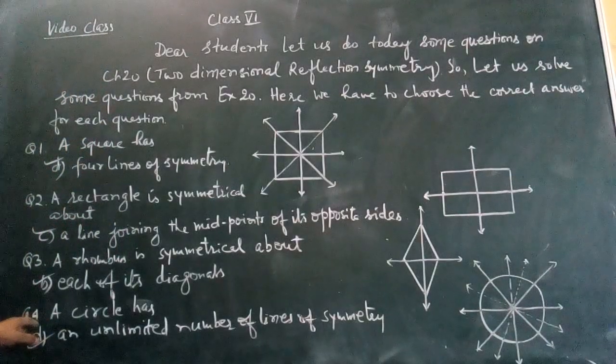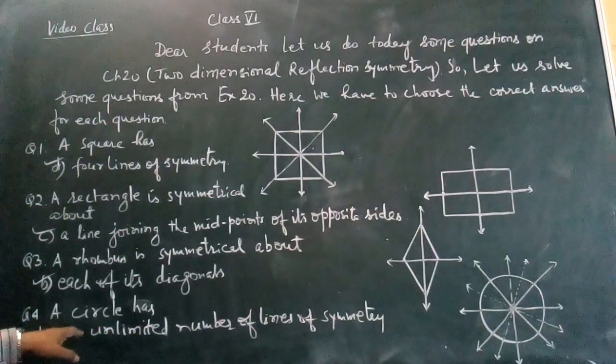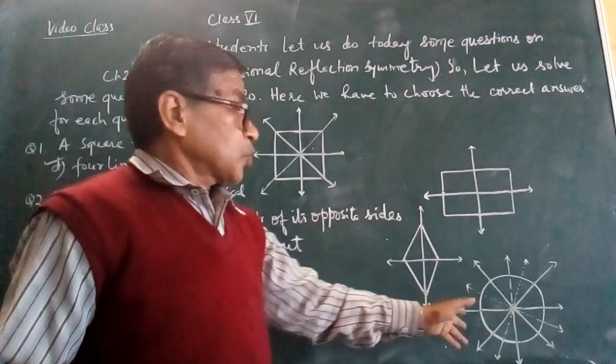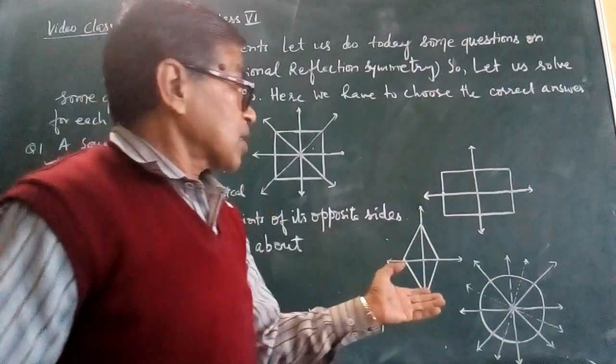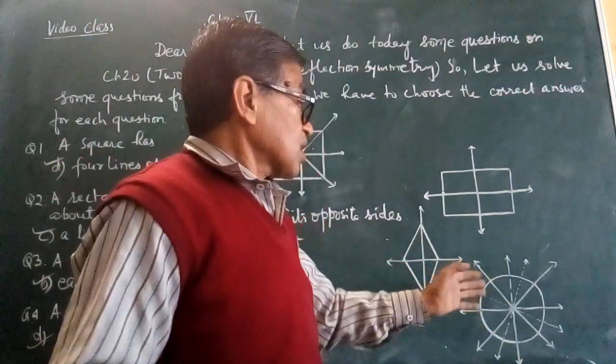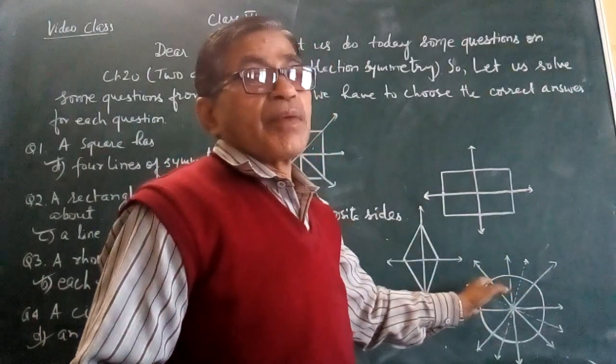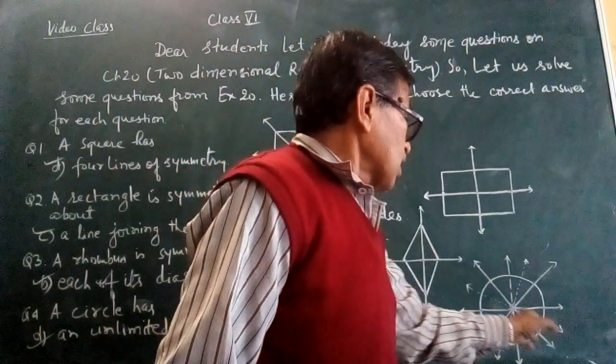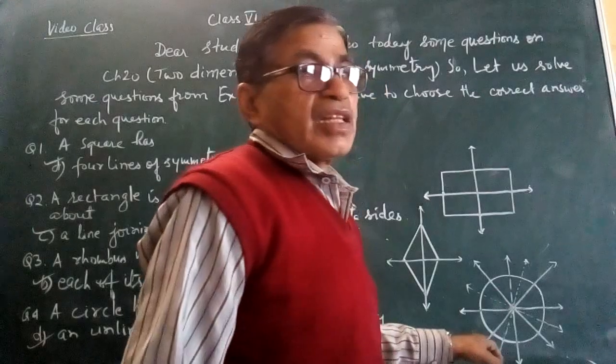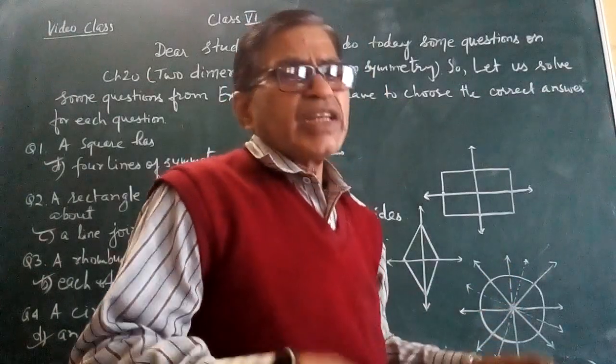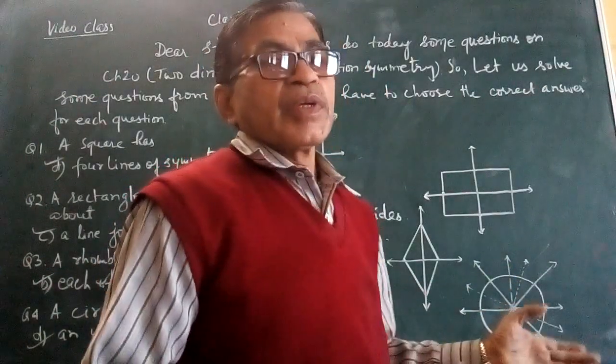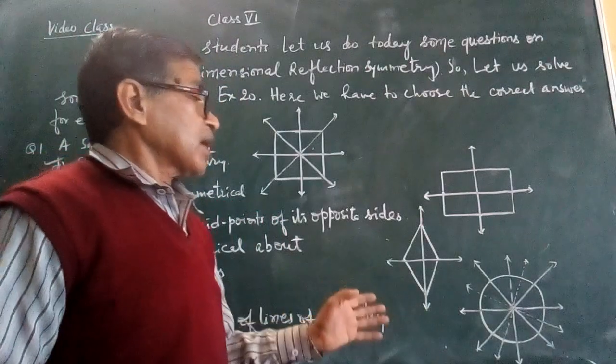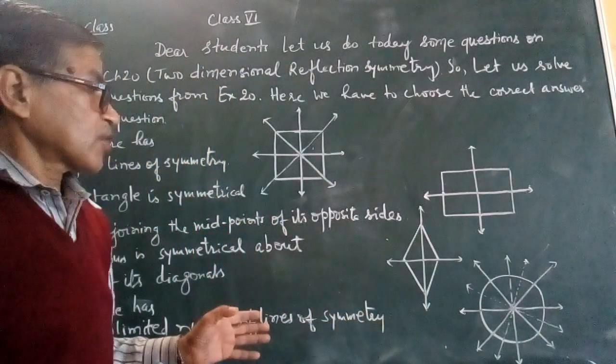Next question number four: a circle has - again, some options are given. But you can see, just go through the figure, you will find how many lines of symmetry does a circle have. A circle has infinite number of lines of symmetry. As you can see here, it is one along the diameter. Again, it is another along the diameter. So many lines of symmetry will be found along the diameter in this circle. We can see that a circle has unlimited number of lines of symmetry.